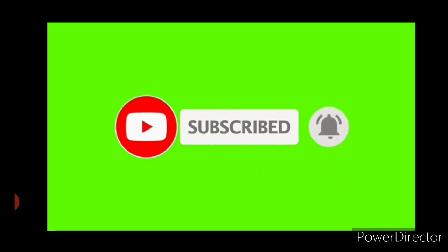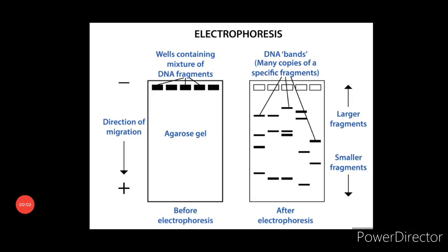Any charged molecule in solution will migrate in an applied electric field, a phenomenon known as electrophoresis. The rate of migration depends on the strength of the electric field and the charge density of the molecule - that is, the ratio of charge to mass.